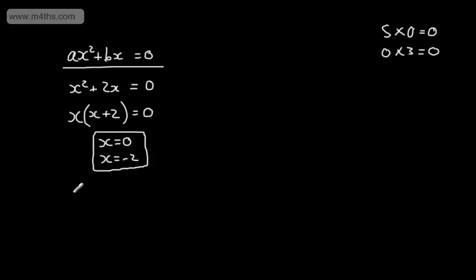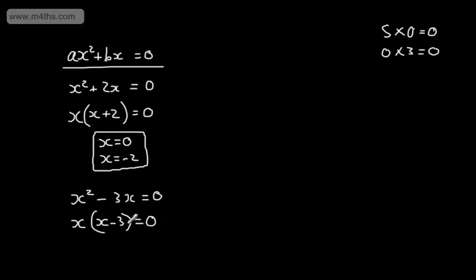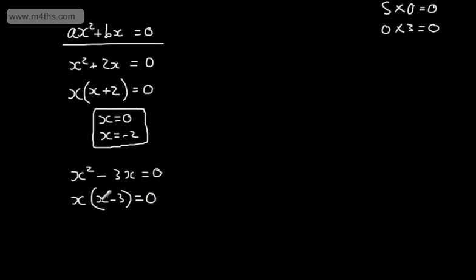Let's look at another one: x squared minus 3x is equal to zero. We factor out the x, giving us x multiplied by x minus 3 is equal to zero. So either one or both must be equal to zero: x is equal to zero, or x minus 3 is equal to zero, which means x is equal to 3. These are the two possible solutions to the quadratic equation.